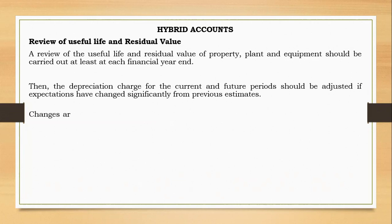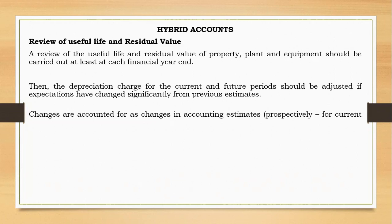These changes are accounted for as changes in accounting estimates and so they are applied prospectively — meaning for current and future periods — as per IAS 8. IAS 8 speaks of accounting policies, changes in accounting estimates, and prior period errors. When we speak of estimates, the review of useful life, residual value, or the depreciation method itself is a change in accounting estimates, so we apply it for the current and future periods and it will not affect previous periods.